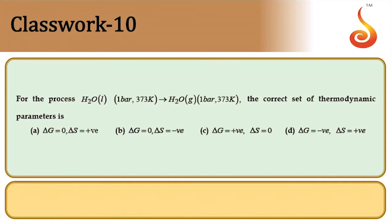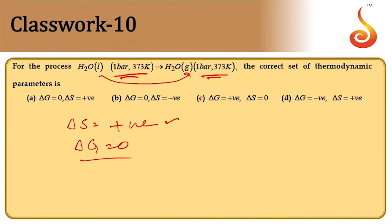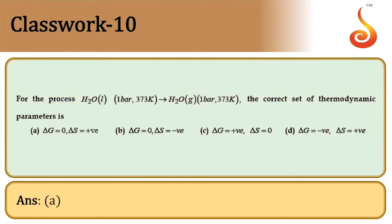For the process H₂O(l, 1 bar, 373 K) → H₂O(g, 1 bar, 373 K), conditions remain same and only physical state changes from liquid to gas. Therefore ΔS is positive. Since the given conditions represent an equilibrium state, ΔG = 0. Option A is correct.